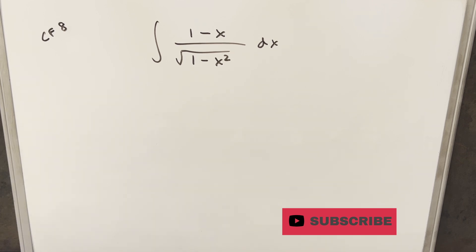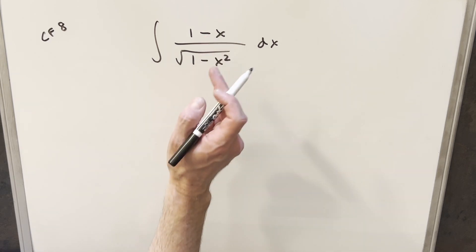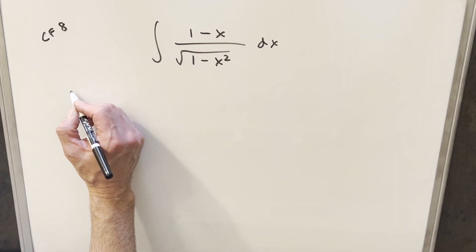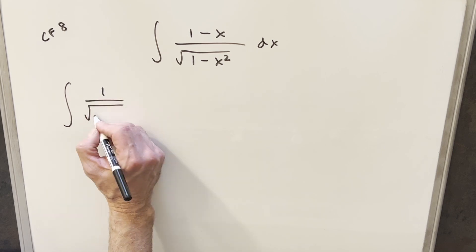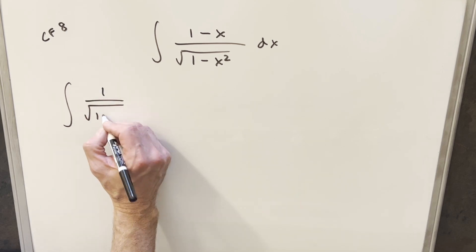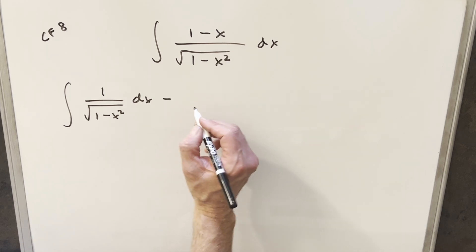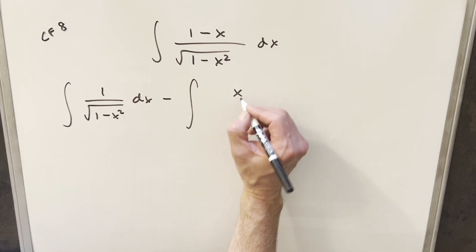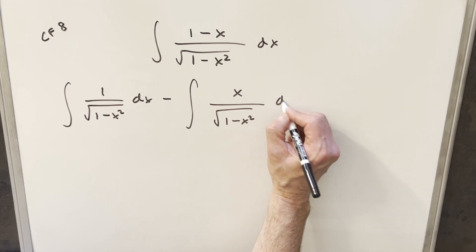The way I want to do this to get to a quick solution is to just break it into two integrals, because we've got the minus in the numerator and that's going to allow us to split this up. So for my first integral, we'll just have one over the square root of one minus x squared. And then for the second one, I'll bring a minus out front and we'll just have x over the square root of one minus x squared dx.